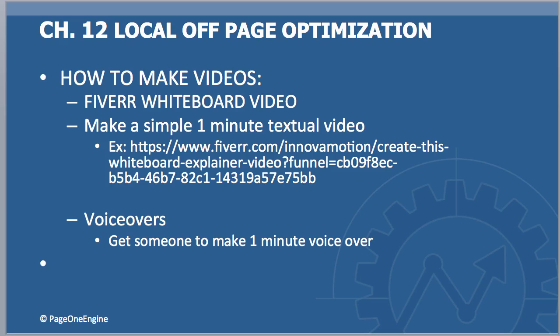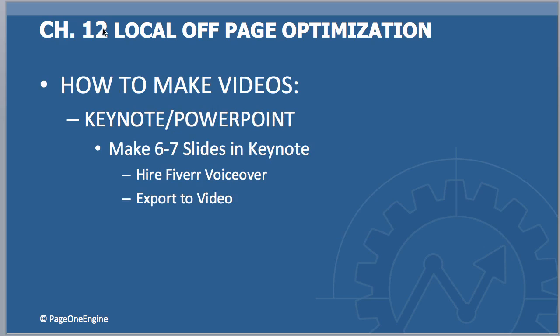There are several ways to make videos. First, you can go to Fiverr and hire someone selling whiteboard videos — it works, but try to have some variety in your video selection. You can also search for a good voiceover on Fiverr; usually they can do about a minute for around $10. One of my favorite ways to make videos is using Keynote or PowerPoint and making slides — your video only has to be about a minute to a minute thirty, so just put together about five or six slides with a voiceover going over them.